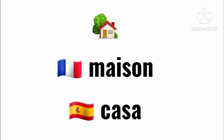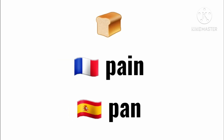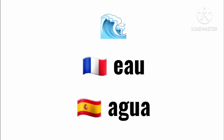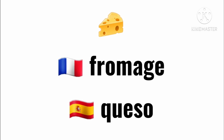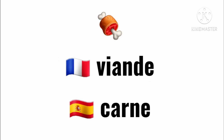There is also no relationship between the words for house: in French it's 'maison' and in Spanish it's 'casa'. Bread in French is 'pain' and in Spanish 'pan' — you can see that they share the same origin. Water in French is 'eau' and in Spanish it's 'agua'. It's 'pomme' in French and 'manzana' in Spanish, and the English word is apple.